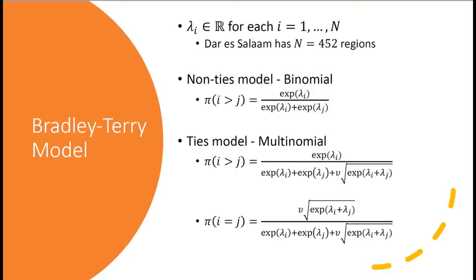In the non-ties model, we can build up a binomial distribution. Say you want to compare two areas — area i and area j — and you want to know which one is better. You go out, ask a lot of people, and they bring back a load of responses: some say area i is better, some say area j is nicer. You can generate a binomial model where there are only two options, and generate a probability that area i is better than area j by exponentiating the lambda value and taking a fraction, as shown here. This can be seen as the probability of picking area i over area j.